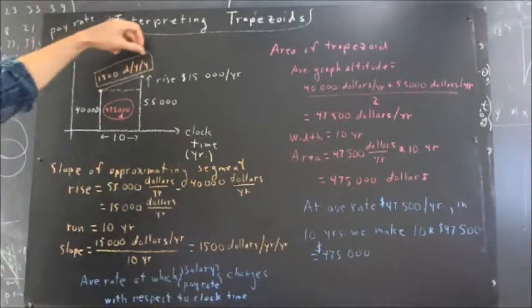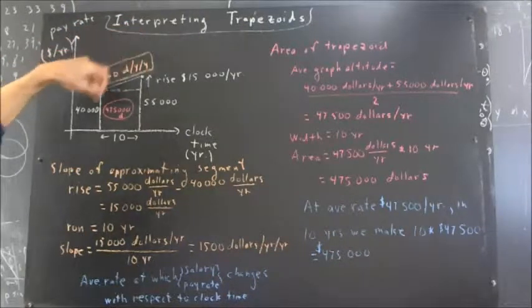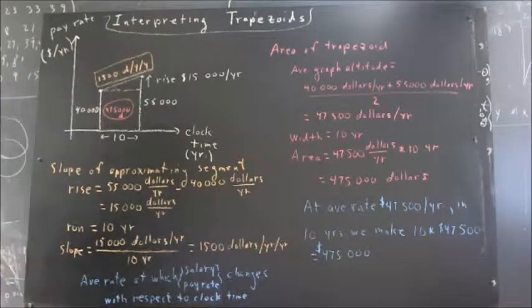We complete this by labeling the slope $1,500 per year per year and the area $475,000.